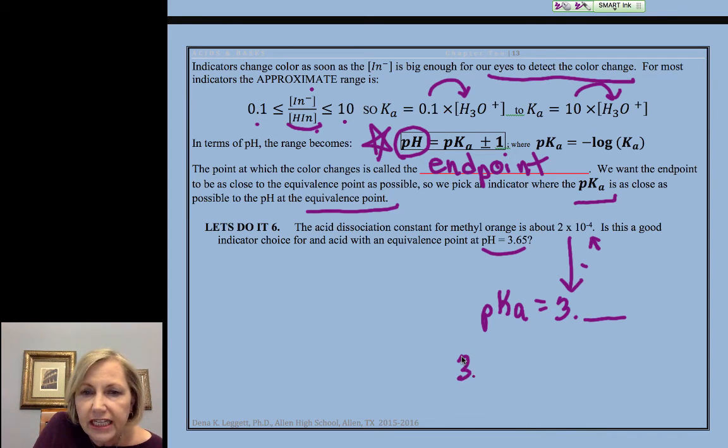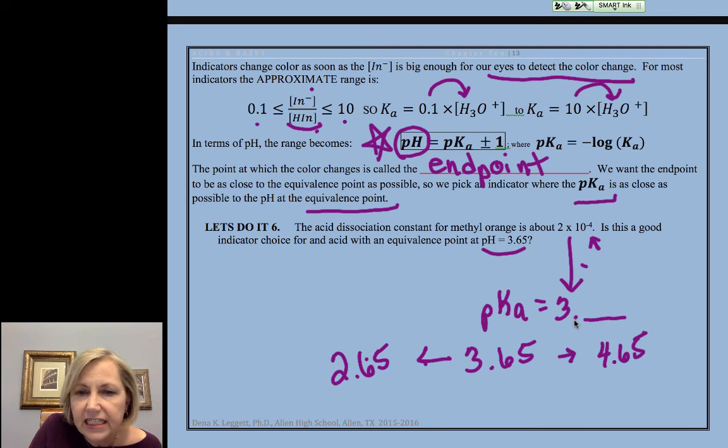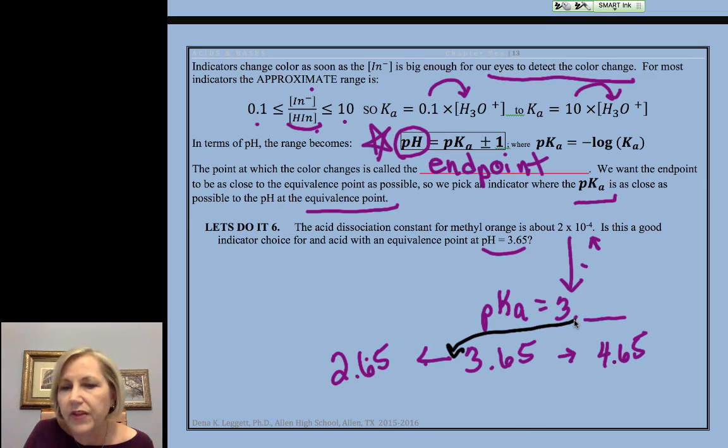Well, our range is 3.65. I mean, you want it as close as possible, but sometimes you just can't get it quite where you want it. So we need the pKa to be plus or minus 1. So we could go up to 4.65, or we could go down to 2.65. And we find out that indeed, yes, the pKa of methyl orange falls right in that range. So here's the pKa. It's going to be 3 something. It's going to fall within our range.